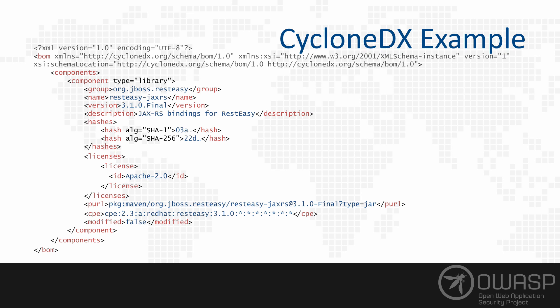The following is a CycloneDX example. In this example, we have a single Bill of Materials and a list of components. Due to screen real estate, only a single component is listed, and that component is of type library. We specify the group of that component, how it identifies itself, the name, version, and description. We optionally have some file hashes — CycloneDX supports MD5 and SHA-1 all the way up to SHA-3 512. It optionally also supports licenses; in this case, we are specifying the Apache-2.0 license, which is an SPDX license ID.